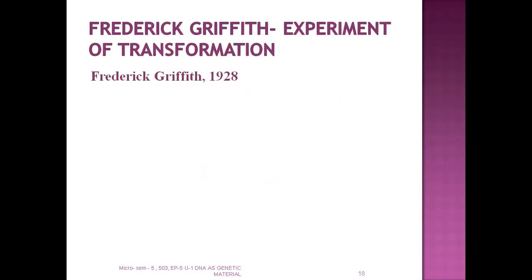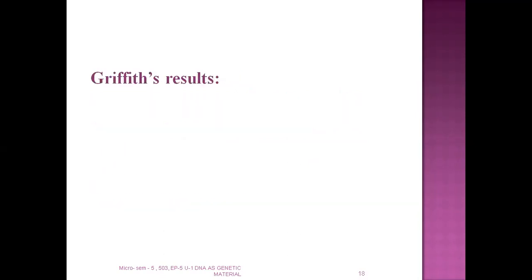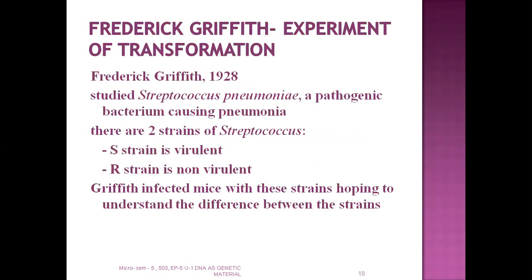The first experiment is the transformation experiment given by Frederick Griffith in 1928. What did Griffith do? He took different strains of Streptococcus pneumoniae, a pathogenic bacteria which causes pneumonia in normal mammals. He took two different strains: one is the smooth strain (S), which is virulent, and one is the rough strain (R), which is avirulent or non-virulent.